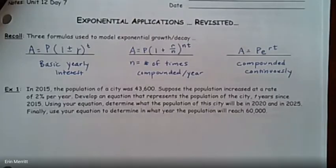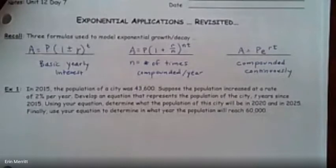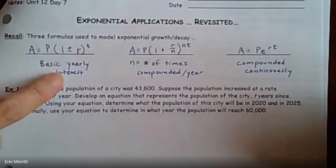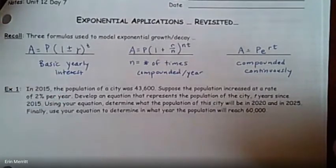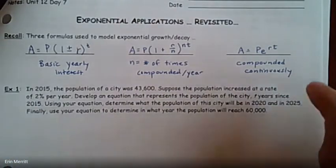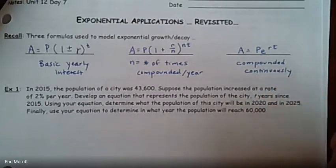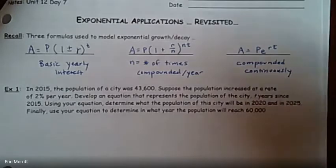Hi, Algebra 2. We're looking at day 7 notes of the logs unit, so exponential applications revisited. We did this in the last unit. Now we're going to talk about how to solve each of these algebraically using logs rather than graphically. The idea of basic interest, plus or minus if it's increasing or decreasing, the number of times they're compounding using that n value, and then if it says compounded continuously or natural growth and decay, that's our Pe^rt formula.